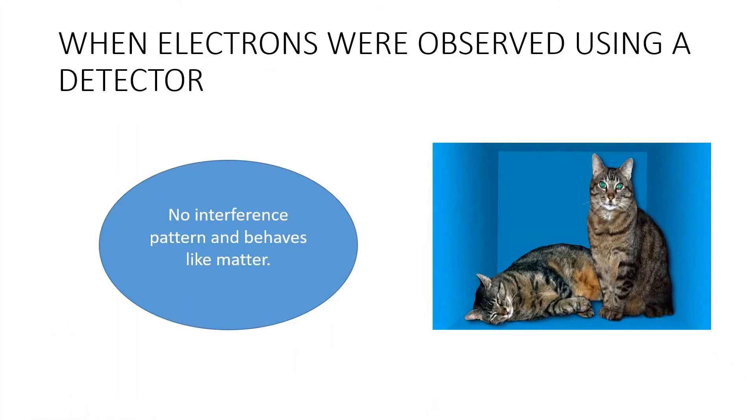But the most uncanny things happened when we used a detector to peep the electrons to see which slit actually the electrons go through. Then the interference patterns disappear and the electrons are behaving like matter.